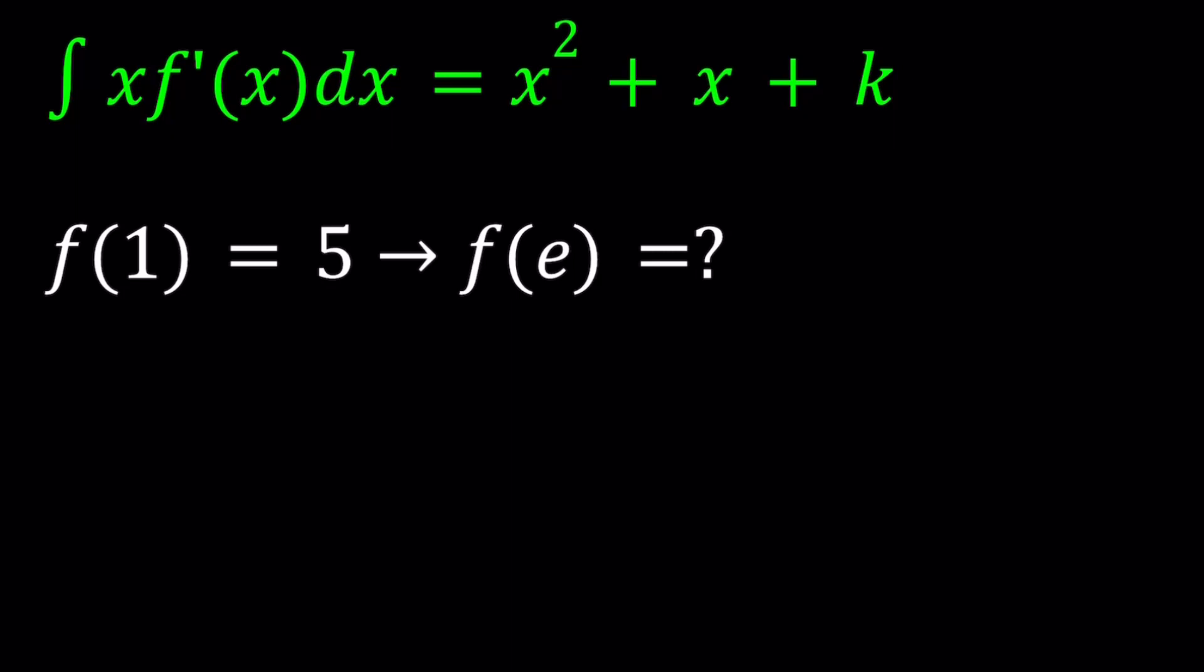We have the integral on the left-hand side. So if we differentiate both sides, since integration and differentiation are inverse operations, they'll undo each other. In other words, they're going to cancel out.